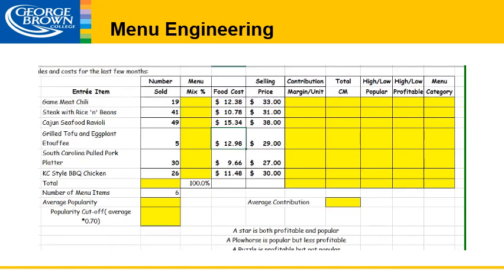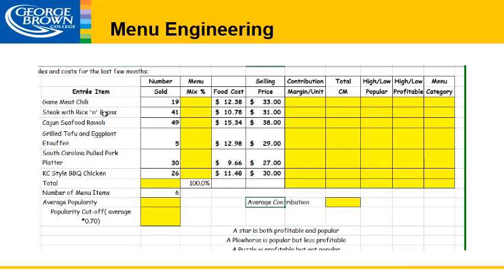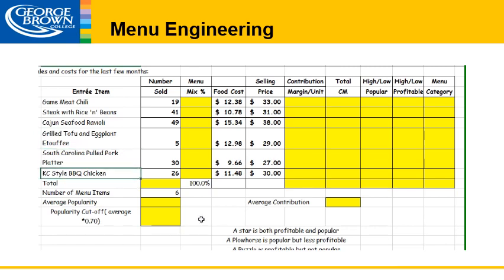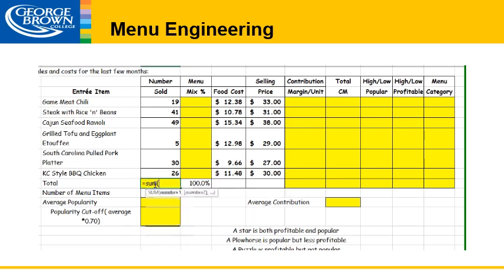In this video we're going to be going over the menu engineering worksheet. We'll also go over this in class, but this is the major deliverable from this chapter. We have each item on our menu: game meat chili, steak with rice and beans, Cajun seafood ravioli, grilled tofu and eggplant etouffee, South Carolina pulled pork, and KC style barbecue chicken. We have the number of each item sold. The first step is to total that up so we can calculate our menu mix percentages. We sold 170 items total.